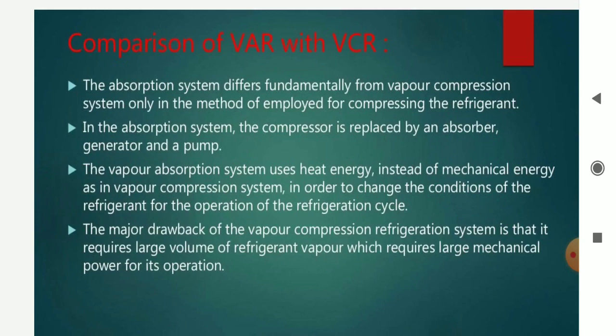There are basically only two methods of refrigeration: Vapor Absorption Refrigeration and Vapor Compression Refrigeration. The absorption system is fundamentally different from the Vapor Compression System only in the method employed for compression. The Vapor Absorption System uses an absorber, while in the Vapor Compression System we use a compressor to compress and raise the pressure of the refrigerant.